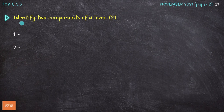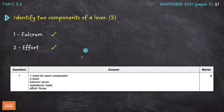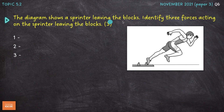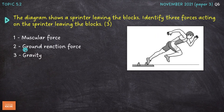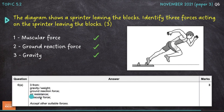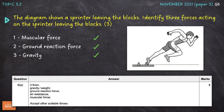We're back onto levers: identify two components of a lever. This is the second time we've had this question; I've gone for fulcrum and effort, with the other component being resistance. Next, the diagram shows a sprinter leaving the blocks — identify three forces acting on the sprinter leaving the blocks. Again, this is essentially the same as our first question. I've gone for muscular force, ground reaction force, and gravity. We could also have gone for air resistance as that fourth option.